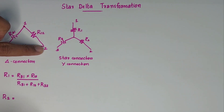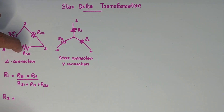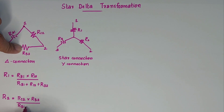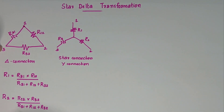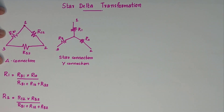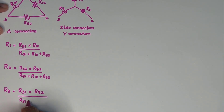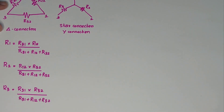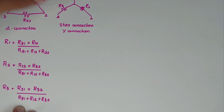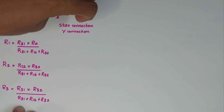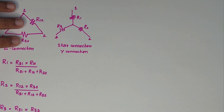So, R2 is the second node we will consider — that is R12 and R32. It is nothing but R12 into R32 divided by the total resistance. R3 is the third node we consider — that is R31 into R32 divided by R31 plus R12 plus R32. If you see, we will convert a delta into star (Y). Now, if you have a star connection, we have to transform it into the delta connection.